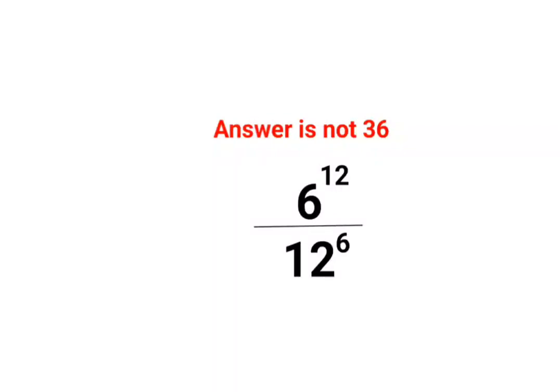Welcome everyone. Yes, a lot of people thought that the answer for this question is supposed to be 36. Please understand, we have a raised to m×n. See, 6 raised to 12 can be written as 6 raised to 6 multiplied by 2, and the logic of indices says we can write it as